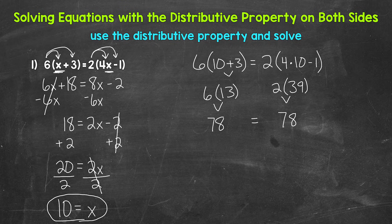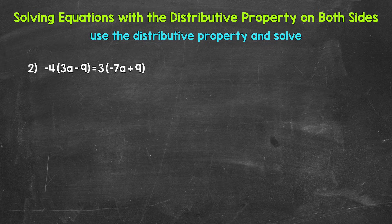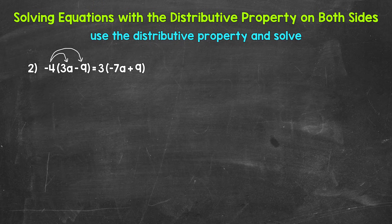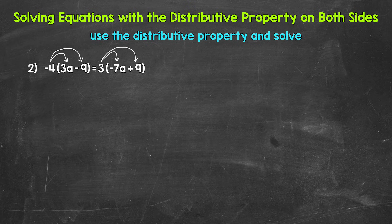Let's move on to number 2, where we have −4(3a − 9) = 3(−7a + 9). Let's start by using the distributive property to remove the parentheses. On the left side, we distribute negative 4 to 3a and negative 9 — keep in mind we use the sign in front. On the right side, we distribute 3 to negative 7a and 9.